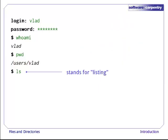Let's see what's inside vlad's home directory by running ls, which stands for listing. It's not a particularly memorable name, but as we'll see, many others are unfortunately even more cryptic.